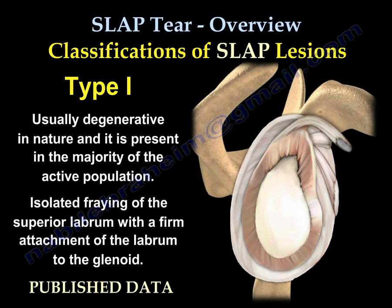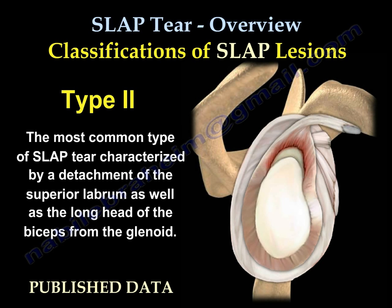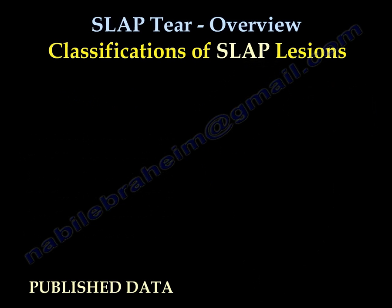Type 1 is usually degenerative in nature and present in the majority of the active population. There is isolated fraying of the superior labrum with a firm attachment of the labrum to the glenoid. Type 2 is the most common type of SLAP tear, characterized by detachment of the superior labrum as well as the long head of the biceps from the glenoid.